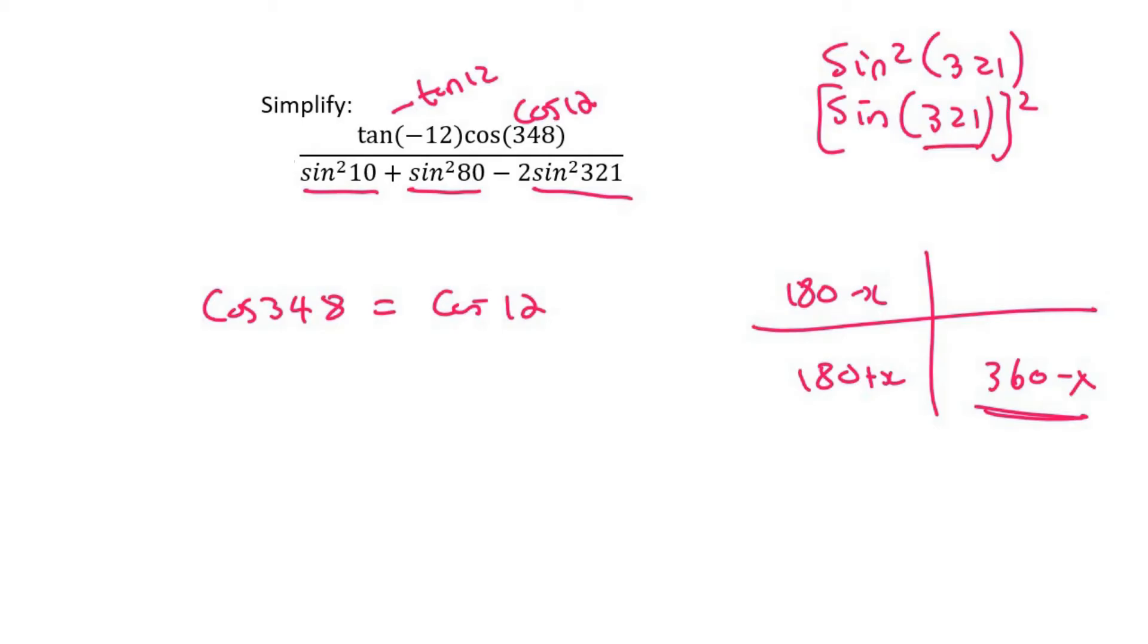And so 321, that's already in this quadrant. So if you go reduce that, it's going to give you sin of 39, but then negative, because sin is negative in that quadrant. But then if we square a negative, it becomes positive. So that's going to be sin squared of 39.